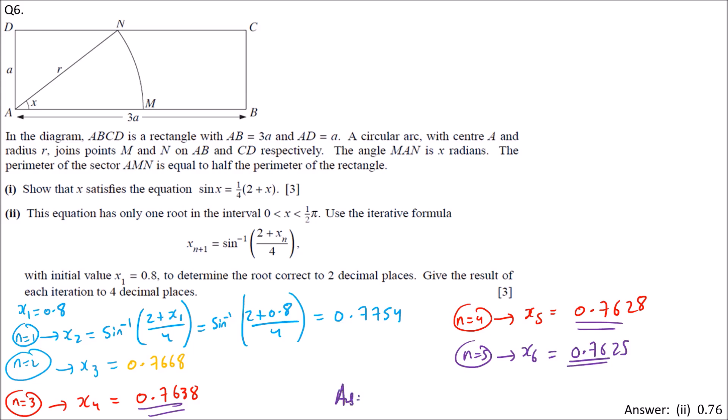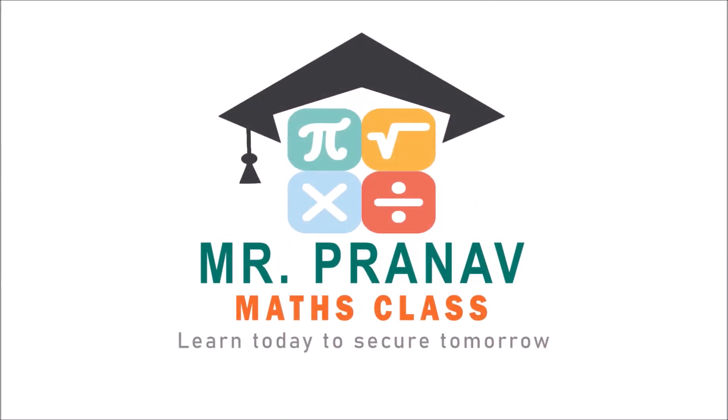The root to 2dp is 0.76. That's the answer for question 6, second part.